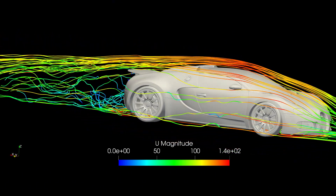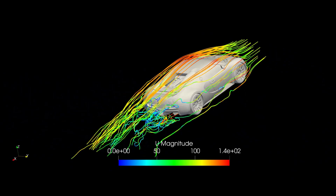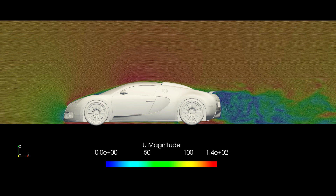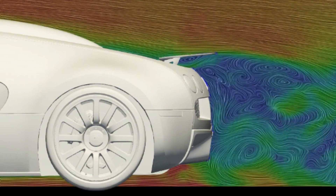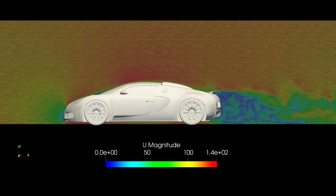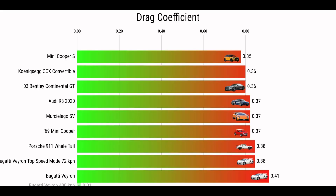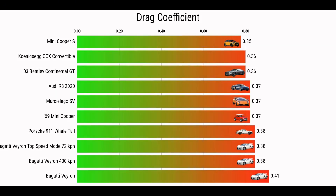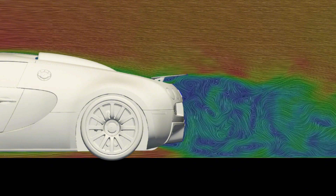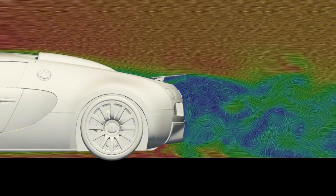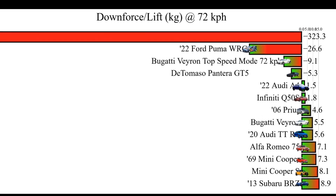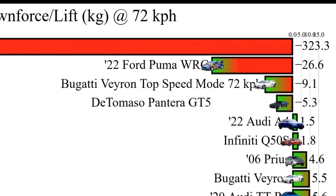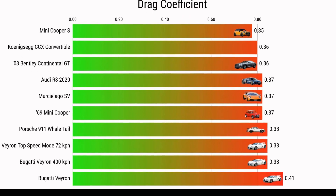So what happens when you use this fast mode at the speed it was actually designed for — 248mph? This is the exact same geometry, but now at 400kph. The aerodynamics is pretty much identical except the velocity is much higher and the pressure spans a greater range. The rear spoiler still does a good job kicking the flow up, and the diffuser accelerates the flow a lot, which greatly reduces pressure and increases downforce. Considering just how fast the flow is, the wake isn't that large. Surprisingly, the drag coefficient is the same at 400kph as it was at 72kph, coming in at 0.38. The lift comes in at minus 323kg, which greatly increases the stability of the car at such high speeds. The only reason you don't run the top speed mode at low speeds is ground clearance, because if you did, you'd also drop the drag coefficient.